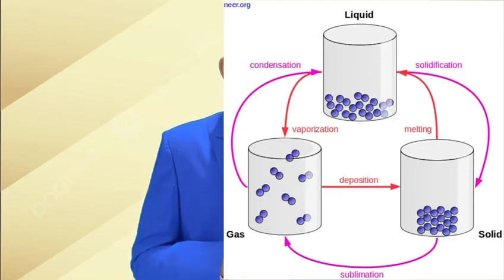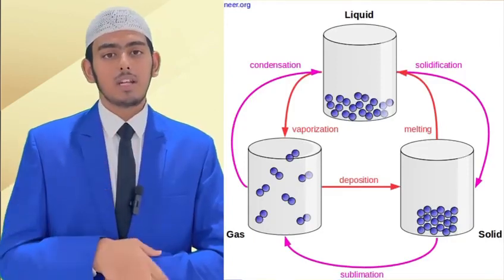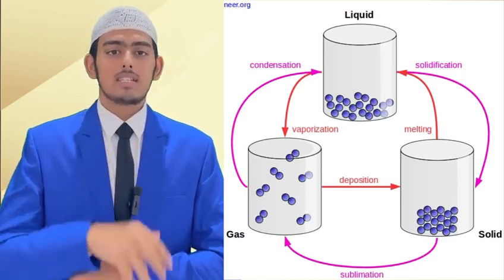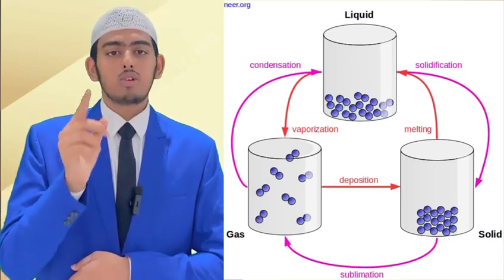States of matter. There are three types of states of matter: first solid, second liquid, and the last one is gas. First we will discuss about solid.